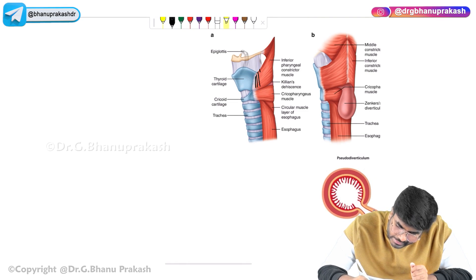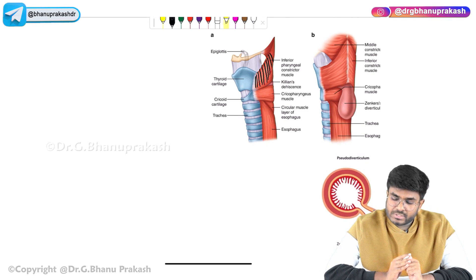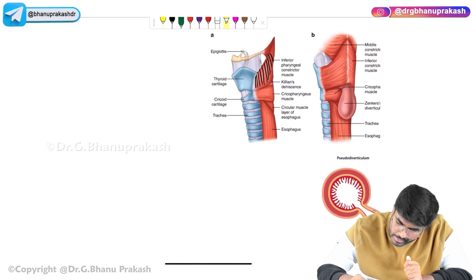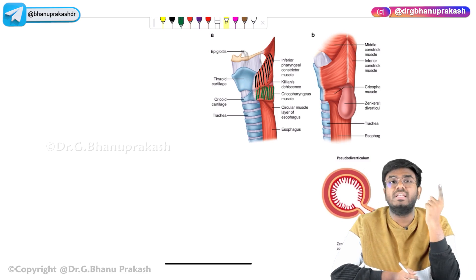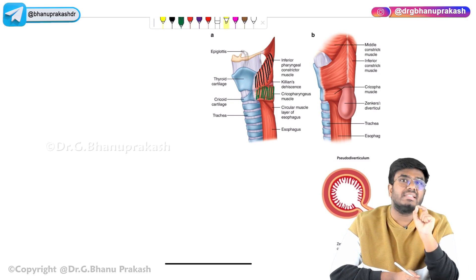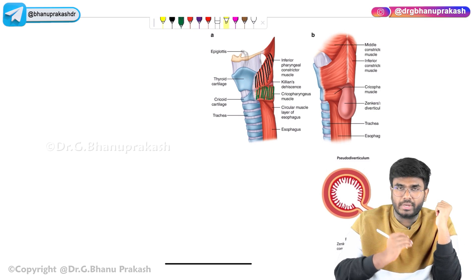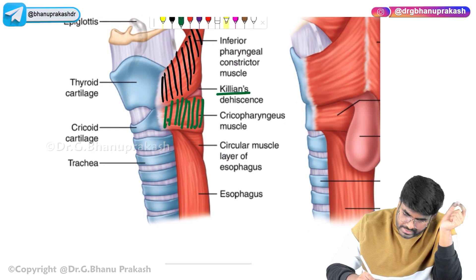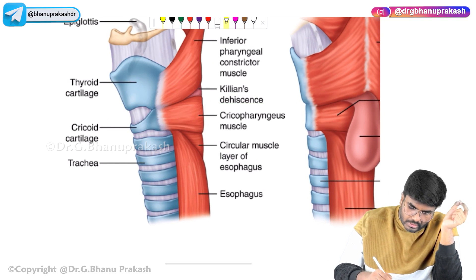This pharyngeal muscle — the one I'm highlighting with black stripes — is called the thyropharyngeus. Down to the thyropharyngeus, there is one more muscle highlighted in green called the cricopharyngeus. Above is the thyropharyngeus, below is the cricopharyngeus. In between these two muscles there is a weak point, and this weak point is called Killian's dehiscence — the weak area between the two muscles.